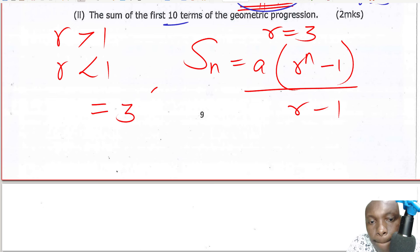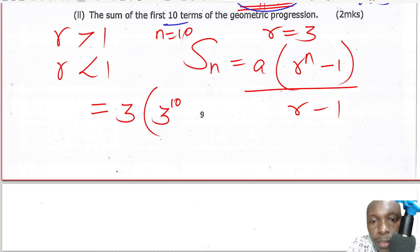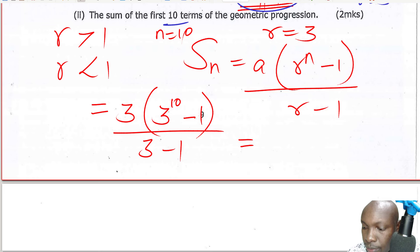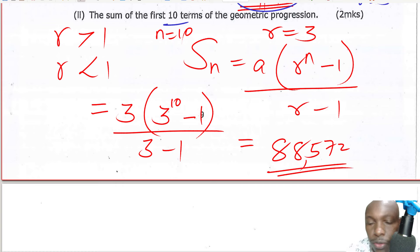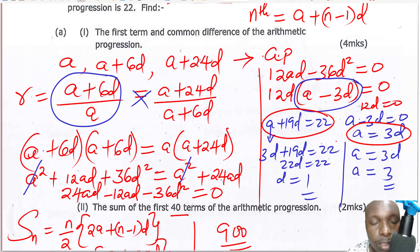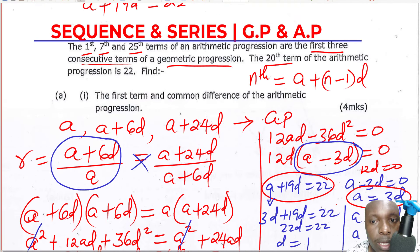S = 3 × (3^10 − 1) / (3 − 1). Working this out on a calculator gives 88,572. That is how you solve a question on sequence and series involving a GP and AP.